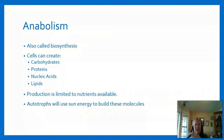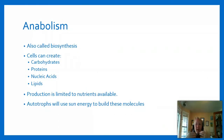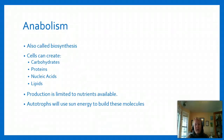Anabolism is also called biosynthesis - you'll see that term used a lot more than 'anabolic processes.' Cells can create all four large biological molecules: carbohydrates, proteins, nucleic acids, and lipids. However, production is limited to the nutrients available. If something is missing, the cell will actually break down parts of itself to harvest the nutrients it needs, so it's important the cell be exposed to all the nutrients it needs.